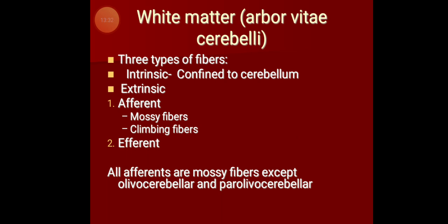These afferent fibers enter the cerebellar cortex and pass through the intrinsic cerebellar circuit. Efferents come out via the axons of the Purkinje cell layer, relay in the intracerebellar nuclei, and from there axons pass via the different cerebellar peduncles to various parts of the CNS, thereby supporting cerebellar function. That concludes the internal structure of the cerebellum; the next topic will continue in the next class.